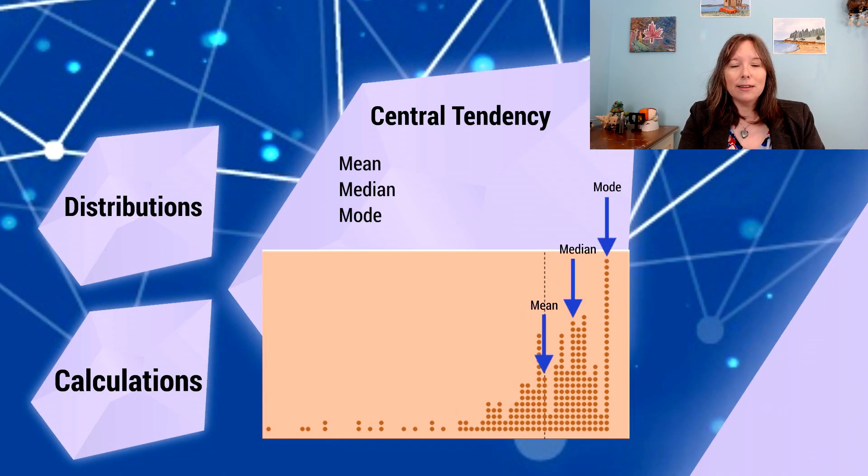So central tendency tells us where the center of our curve is. And in most human characteristics, the center of the curve is in the very center. It's a symmetrical curve. Sometimes it's not, though. And when it's not, we can tease this apart and start to look at three measures of central tendency.